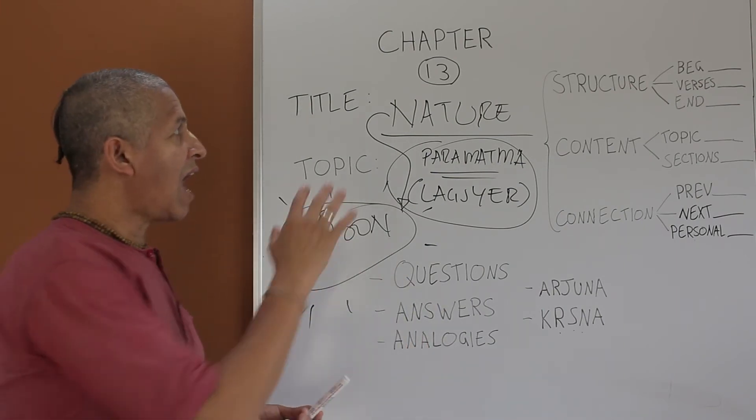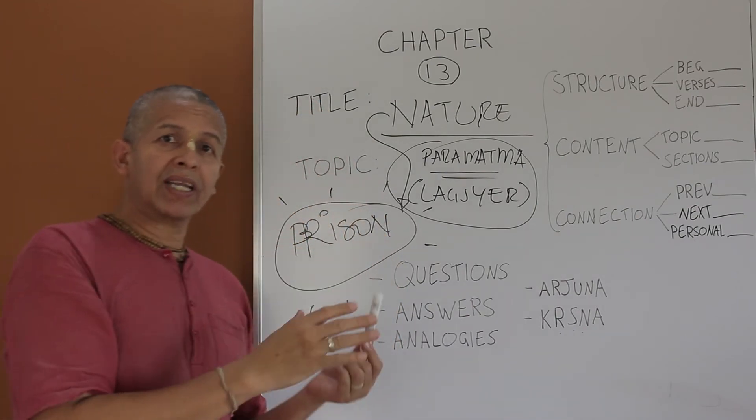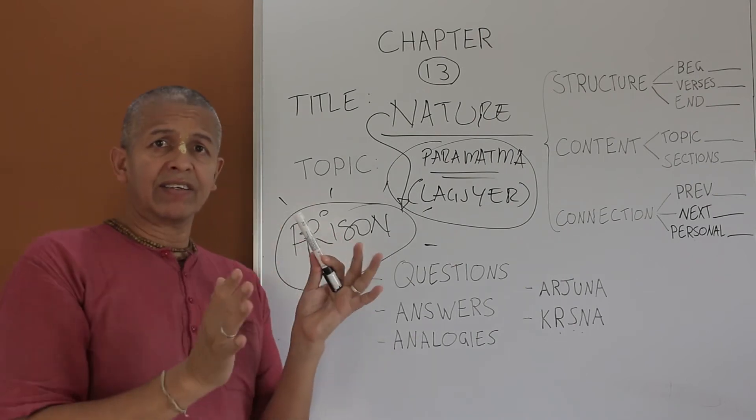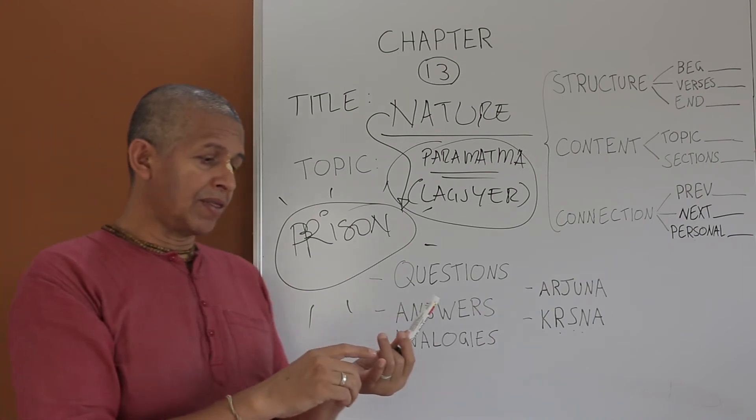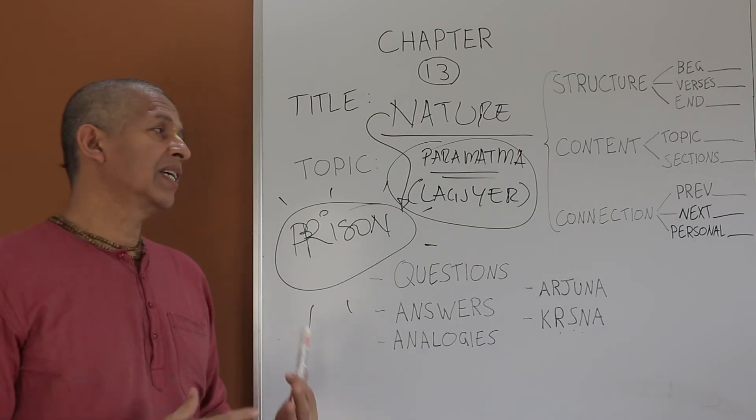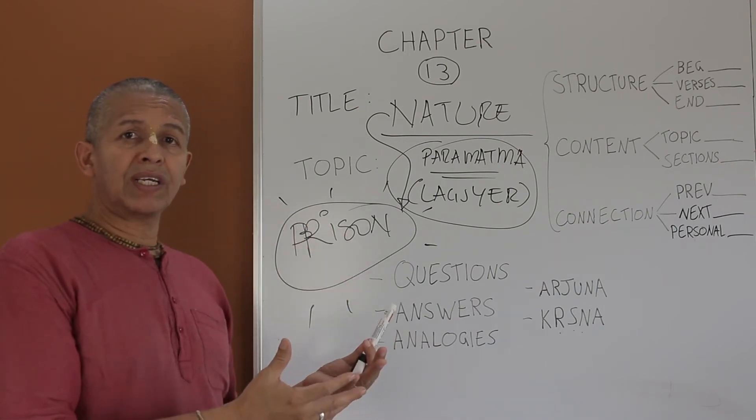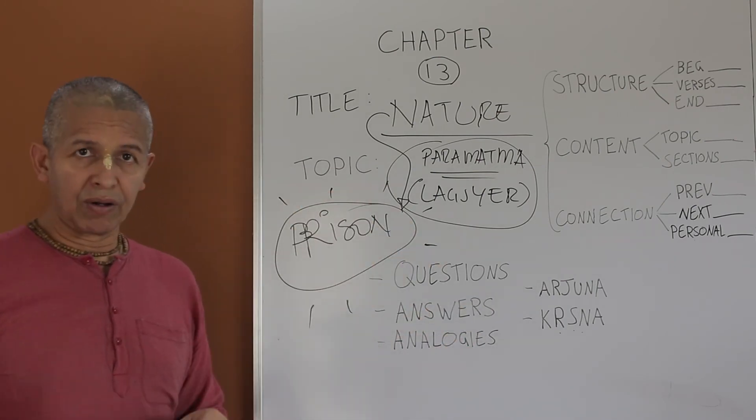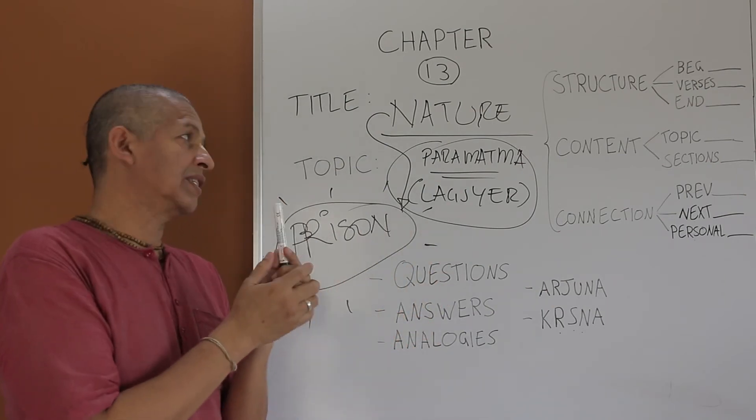How does this chapter begin? Arjuna here, typically, presents a very nice question. He asks six things in the first verse of this chapter. He asks about the nature, he asks about the enjoyer, he asks about the field or the body, the knower of the field. He asks about the definition of knowledge and also what's the purpose of obtaining knowledge. These are the six questions that Arjuna presents in the first text of this chapter.